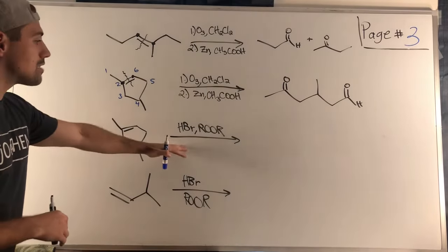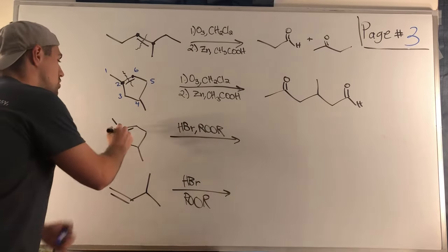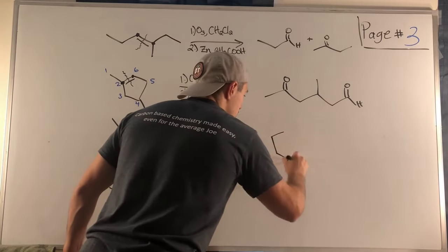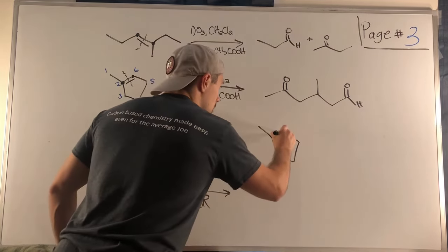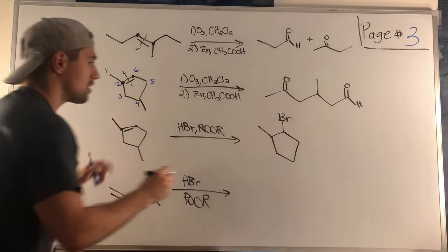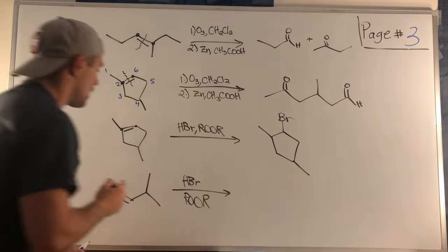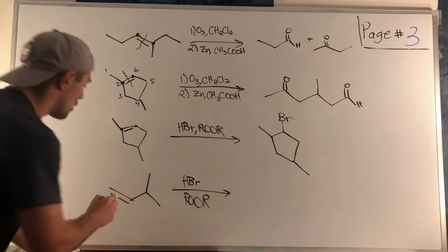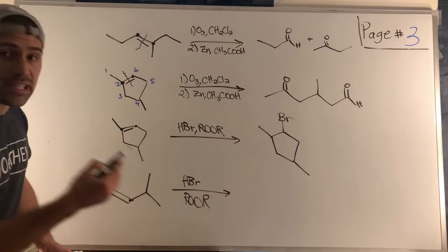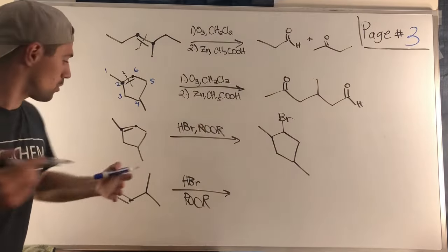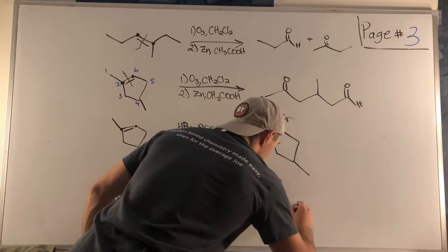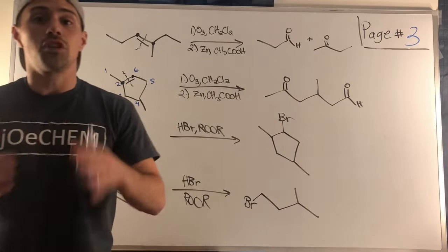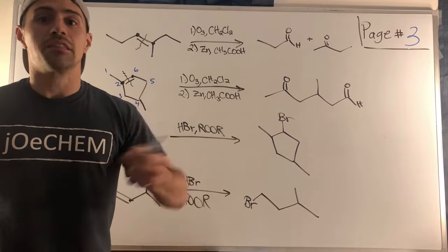For the anti-Markovnikov addition of HBr, given the choice to place bromine on the tertiary or secondary carbon, we go secondary — that's the anti-Markovnikov position. Bromine goes right there on the secondary carbon. For the last problem, primary versus secondary — normally we'd go secondary, but this is the anti-Markovnikov addition, so bromine goes on the primary carbon. That finishes page three.